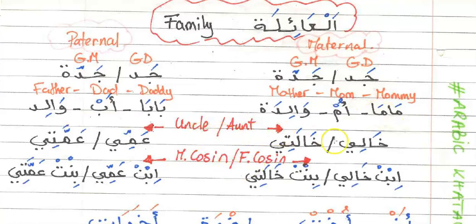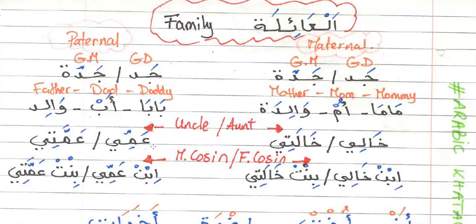For aunt and uncle on the maternal side: khalati for 'my aunt' — with ta marbuta for the feminine — and khali for 'my uncle.' For the paternal side: ammi for 'my uncle' and ammati for 'my aunt.'